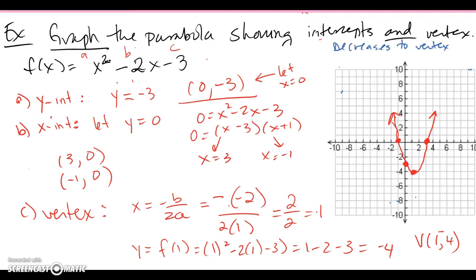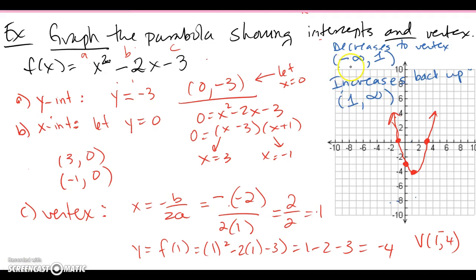Something to point out: the parabola decreases to the vertex and then increases back up. Written left to right, it decreases from negative infinity to x = 1, and increases from x = 1 onward.